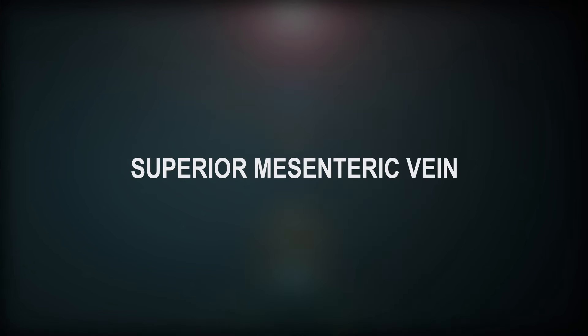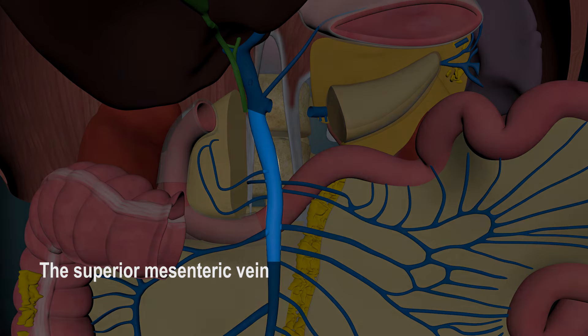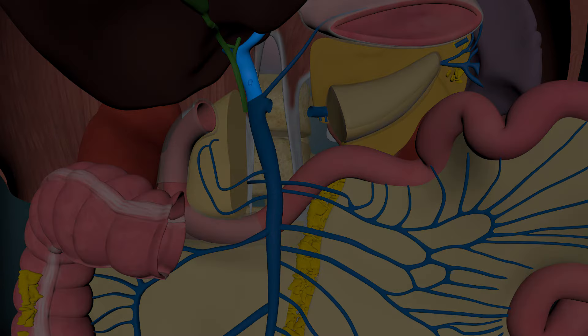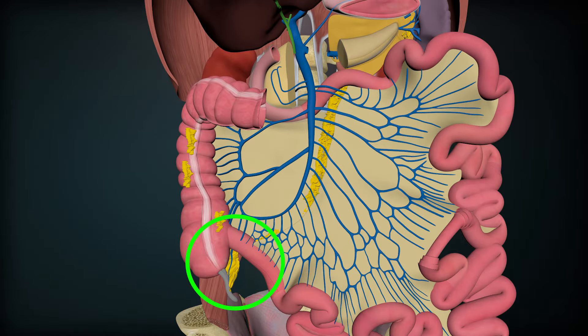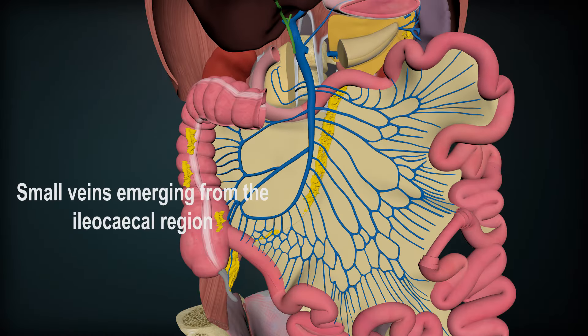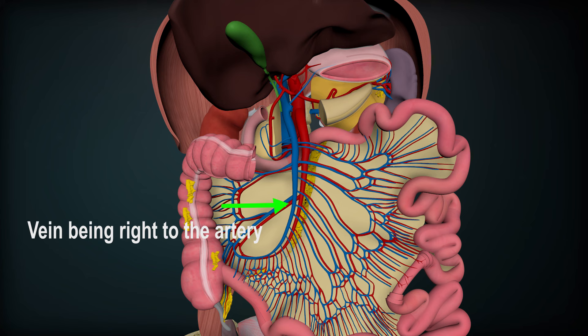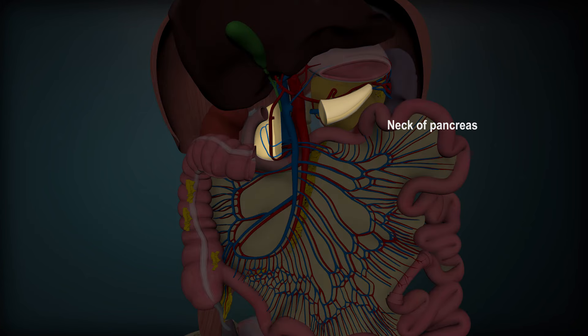Superior Mesenteric Vein: The superior mesenteric vein is the major tributary of the portal vein. It is formed in the right iliac fossa by the union of small veins emerging from the ileocecal region. It runs upward accompanying the superior mesenteric artery, the vein being to the right of the artery, and terminates behind the neck of the pancreas by joining the splenic vein to form the portal vein.